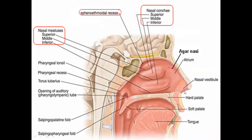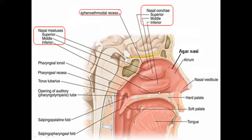The anterior part has a small depressed area called the vestibule. The vestibule is lined by a modified skin with short, stiff, curved hairs called vibrissae. The middle part is called the atrium of the middle meatus, and the posterior part contains the conchae and meatus.